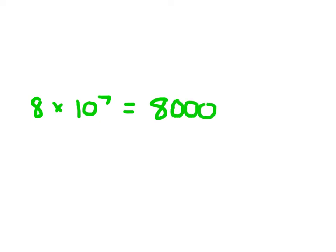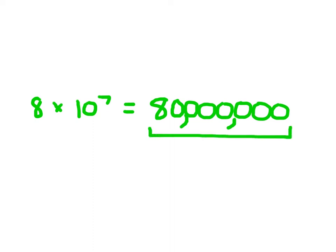Counting out 7 zeros — 1, 2, 3, 4, 5, 6, 7 — then I can go ahead and place my commas. 8 times 10 to the seventh is equal to 80,000,000. That's 80 million.